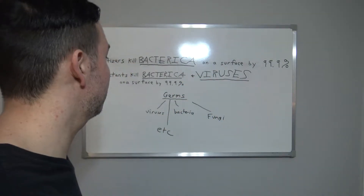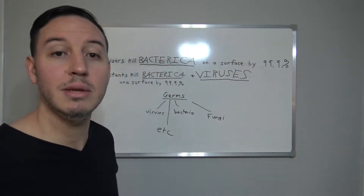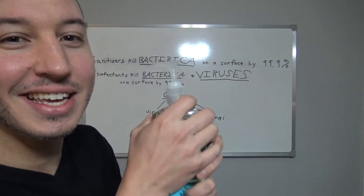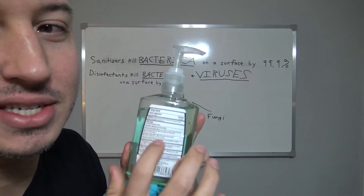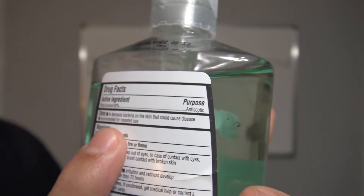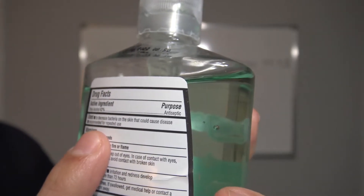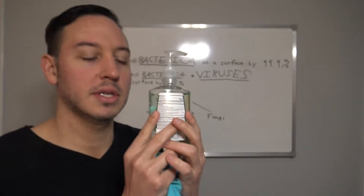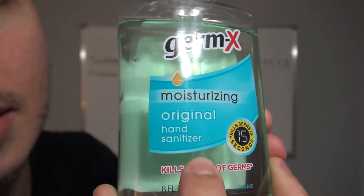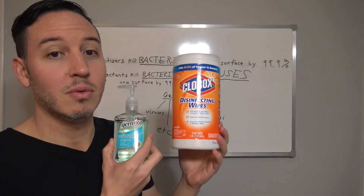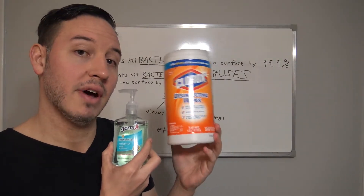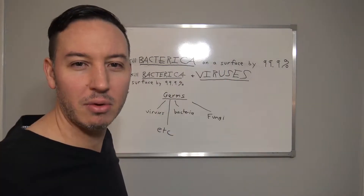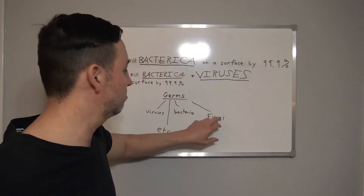Now what about this product? It says it kills 99.9% of germs. Well, 'germs' is a generic term, so we need more information — we need to flip it over to the back. And it says: 'to decrease bacteria on the skin that could cause disease.' So this is a hand sanitizer. You've got disinfectant wipes that kill bacteria and viruses, and hand sanitizer that just kills bacteria.